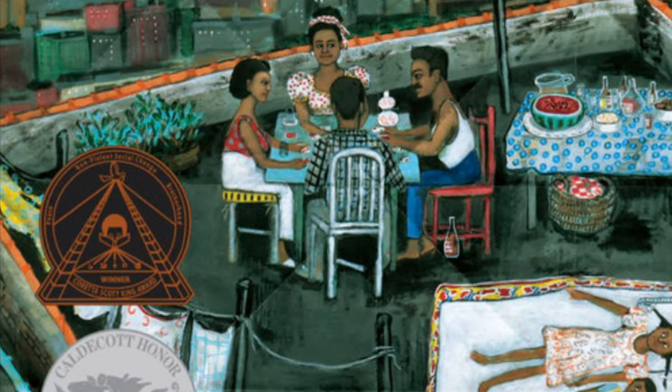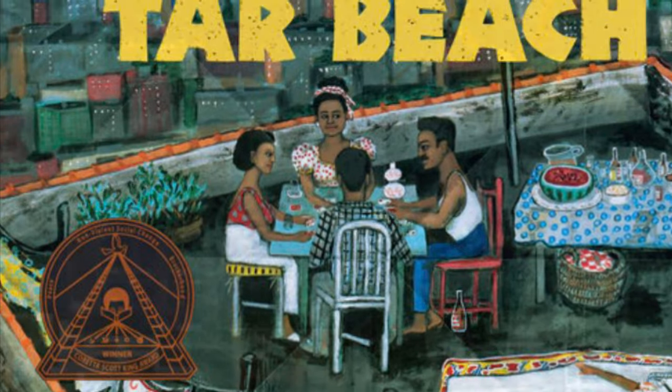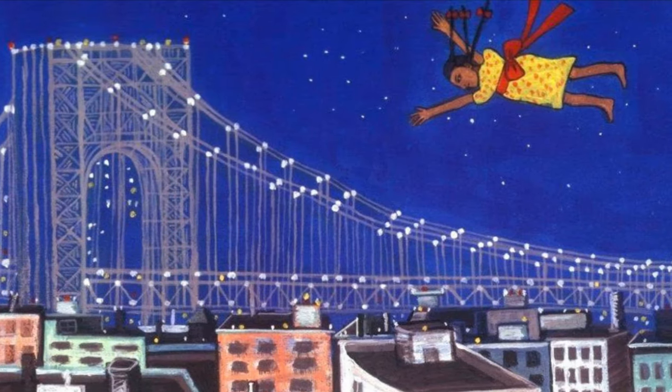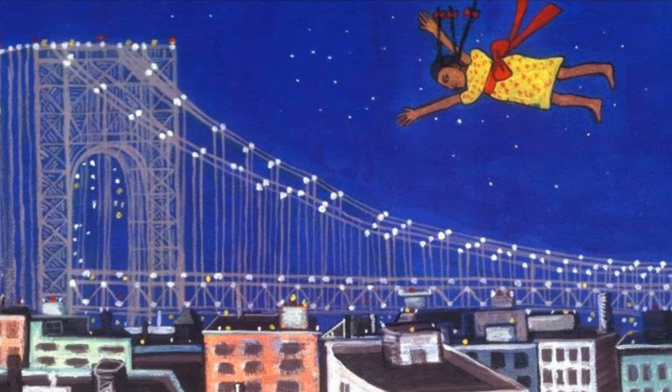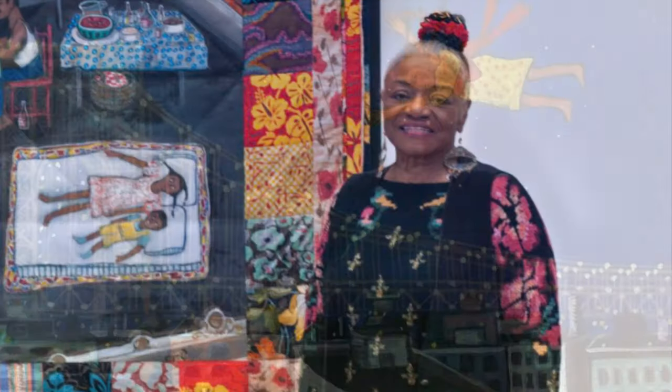In Tar Beach, Faith Ringgold recounts the dream adventures of eight-year-old Cassie Louise Lightfoot, who flies above her apartment building rooftop, the tar beach of the title, looking down on 1939 Harlem in New York. The illustrations and stories are both by artist Faith Ringgold and show her use of color and fabric to tell a story.